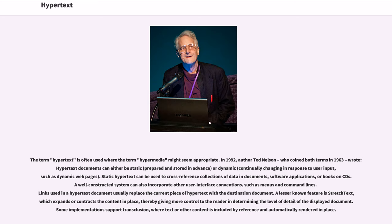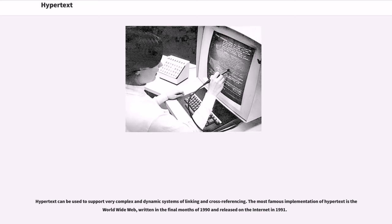A well-constructed system can also incorporate other user interface conventions, such as menus and command lines. Links used in a hypertext document usually replace the current piece of hypertext with the destination document. A lesser-known feature is stretched text, which expands or contracts the content in place, giving more control to the reader in determining the level of detail of the displayed document. Some implementations support transclusion, where text or other content is included by reference and automatically rendered in place.